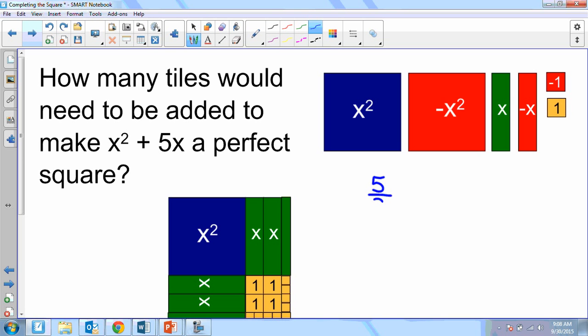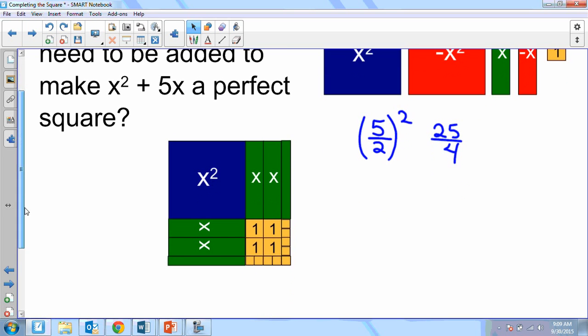I'd have to cut those up as well. So what is half of 5? You said that's 2 and a half or 5 halves, right? If I square that, 5 squared, 2 squared. So all of these little tiles down here would be a total of 25 fourths if I broke them up into 4s. Four, eight, twelve, sixteen, seventeen, eighteen, nineteen, twenty, twenty-one, twenty-two, twenty-three, twenty-four, twenty-five. So we'd have to have smaller tiles.